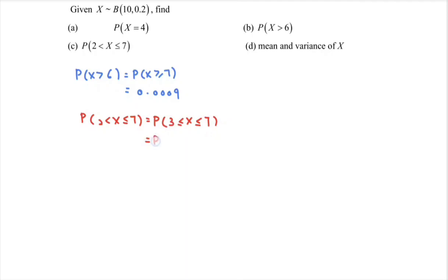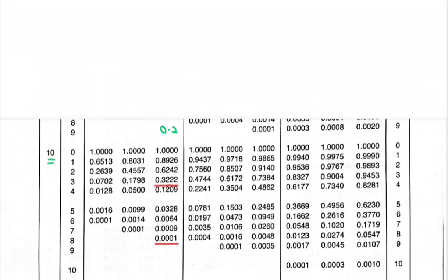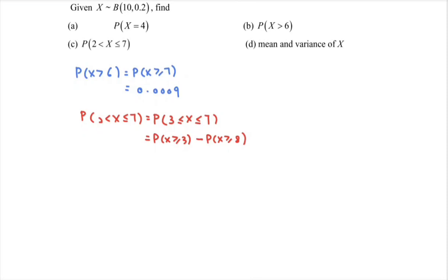Making use of the formula: probability that X is greater than or equal to 3, minus the probability that X is greater than or equal to 8. We are interested in values 3, 4, 5, 6, and 7, but not 8 and above, so we subtract. From the table, the probability that X is greater than or equal to 3 is 0.3222, and the probability that X is greater than or equal to 8 is 0.0001. So the probability that X is greater than 2 and less than or equal to 7 equals 0.3221.